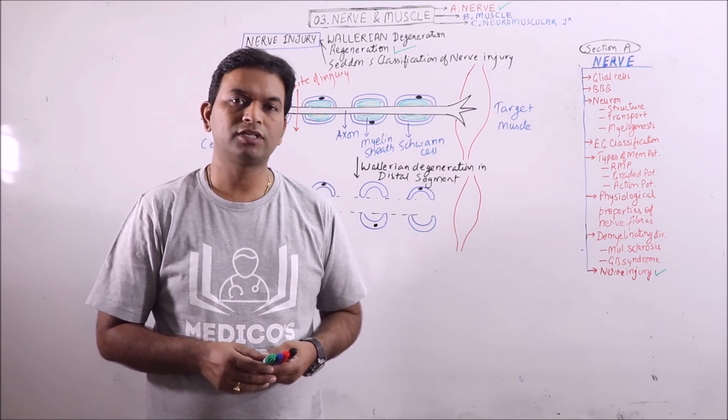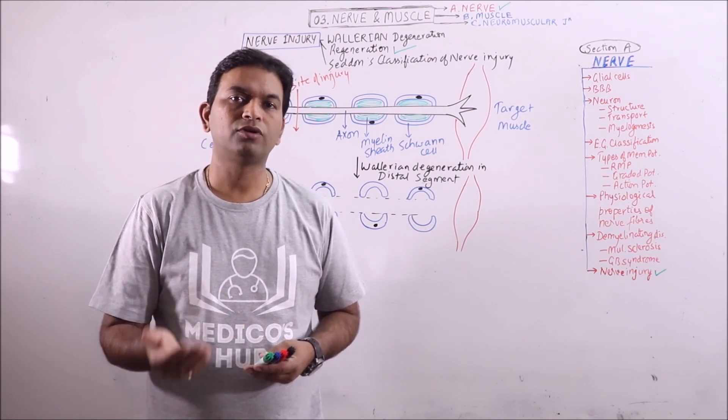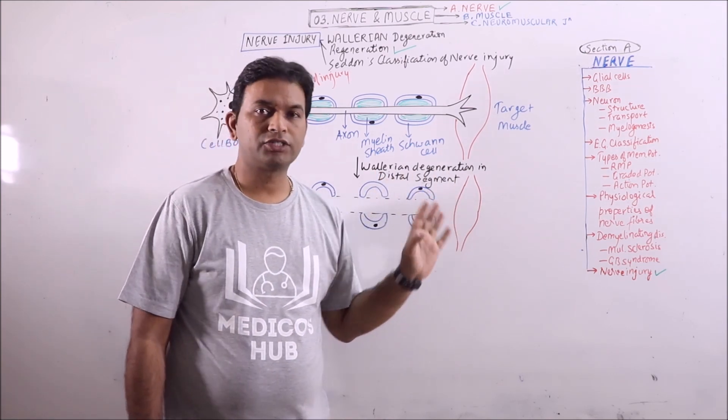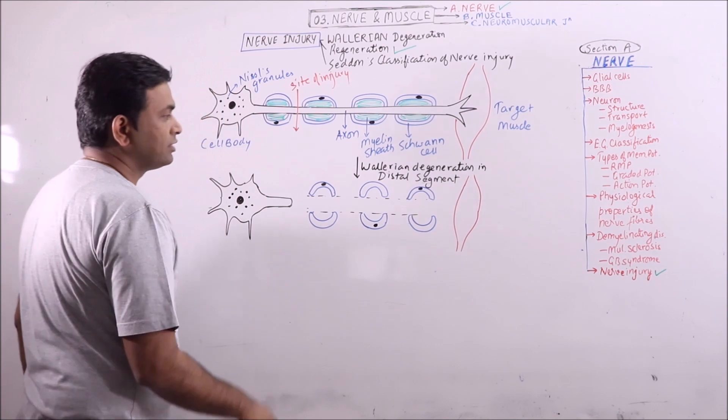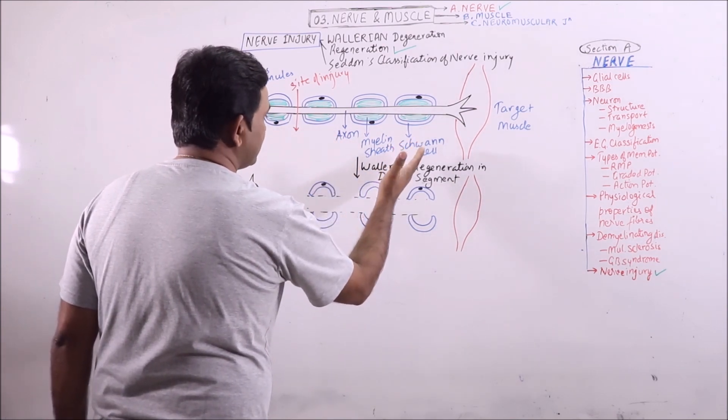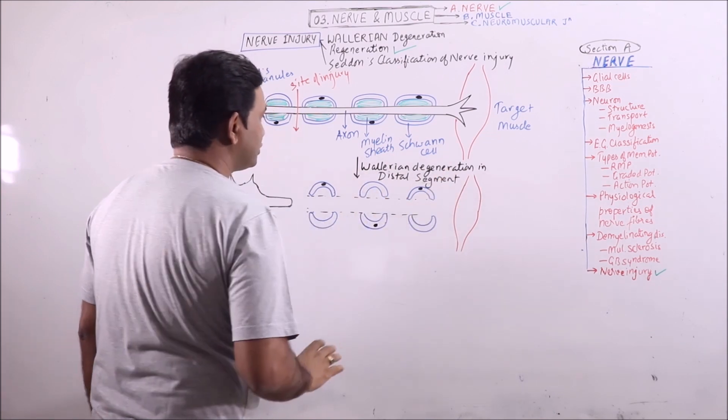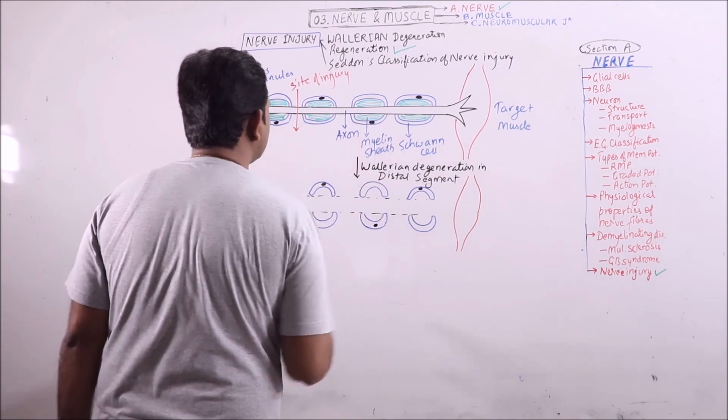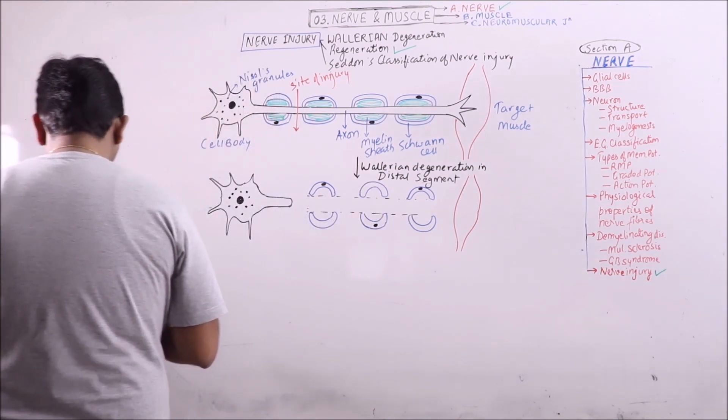In the previous lecture we have discussed the changes in the part of neuron distal to the site of injury, and that was Wallerian degeneration. The part of neuron distal to the site of injury will be degenerated by a process of Wallerian degeneration. Only the Schwann cells are spared, not even the myelin sheath is spared.